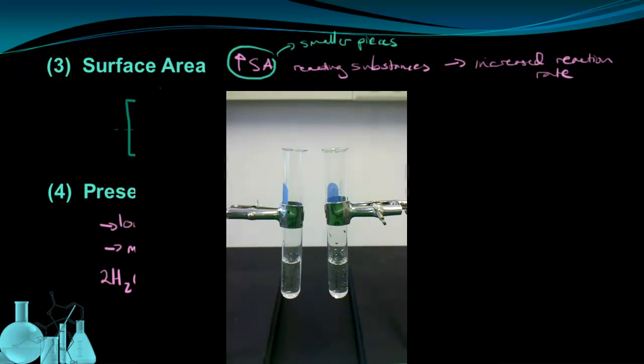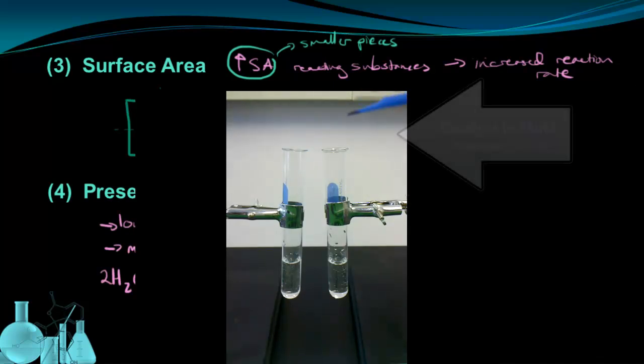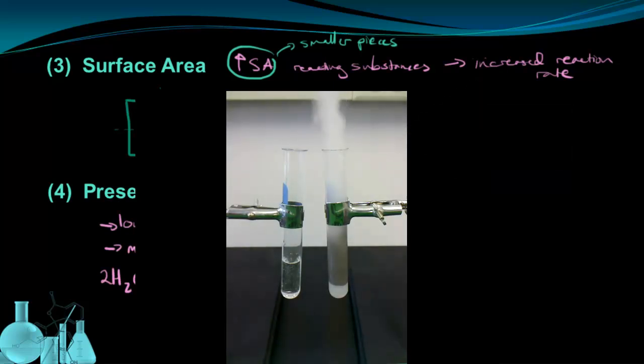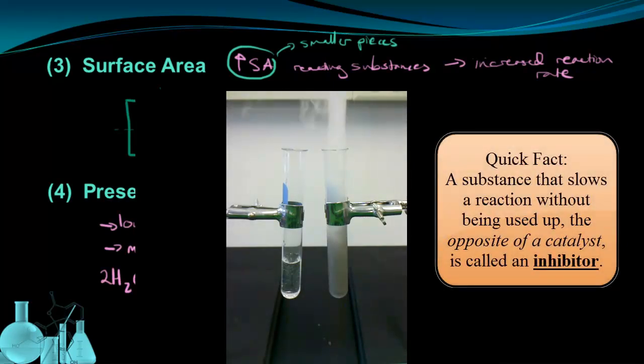But I'm going to add a catalyst to the test tube on the right. When I add a catalyst, in this case manganese dioxide, you can see that the reaction occurs much faster to the point where you can see all the bubbles coming out because all the oxygen is being released all at once.